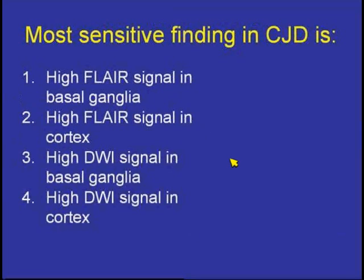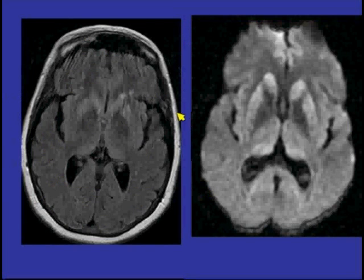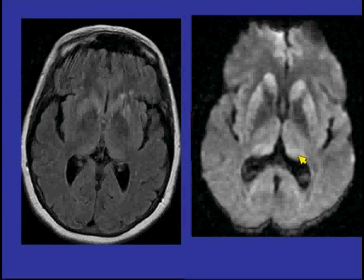The most sensitive finding is high diffusion-weighted imaging signal seen in the cortex. As most of you are probably aware, high signal intensity both on FLAIR and diffusion-weighted scan in the basal ganglia is relatively common as well. The other finding to look for is involvement of the thalamus and pulvinar region, because that is a pattern sometimes seen with the sporadic CJD variety.